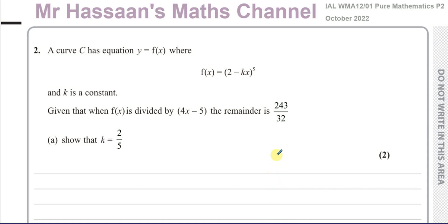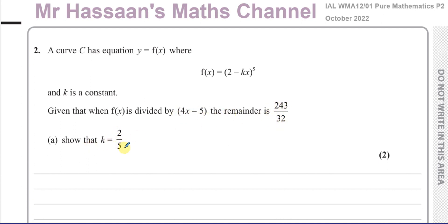Welcome back. This is Mr. Hassan's Math Channel and this is question number two from the October 2022 International A-Level NXL Pure Mathematics P2 paper. Question A is about the remainder theorem. We're told about the curve with equation y equals f of x, where f of x equals 2 minus kx to the power 5 and k is a constant, given that when f of x is divided by 4x minus 5 the remainder is 243 over 32. Show that k equals 2 fifths.